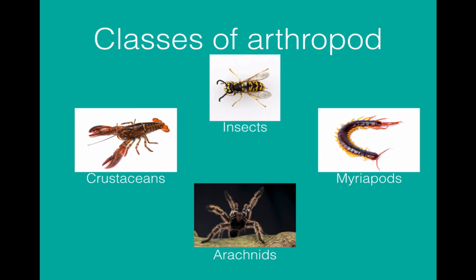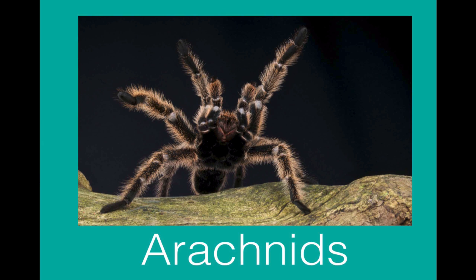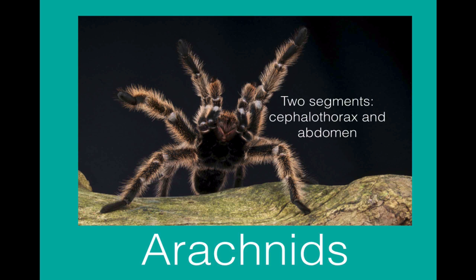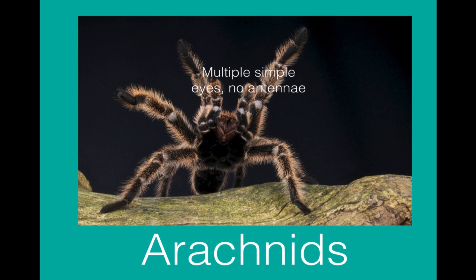The final class of arthropods are the arachnids, which include spiders, scorpions, and mites. They have two segments: a cephalothorax and an abdomen. They have four pairs of legs — sometimes they have extra appendages like this tarantula does at the front, but those don't count as true legs. Instead of compound eyes, they have multiple simple eyes. They generally don't have antennae. Many arachnids are poisonous — think of a black widow spider or a scorpion — and this is one of the things that sets arachnids apart from many other species.